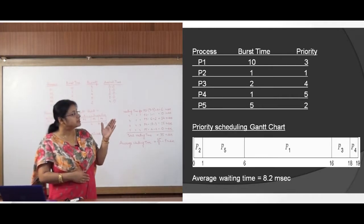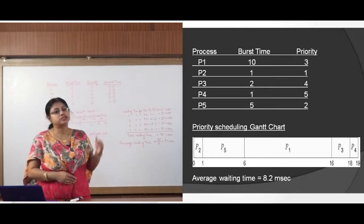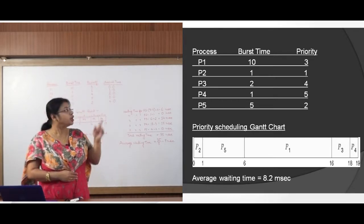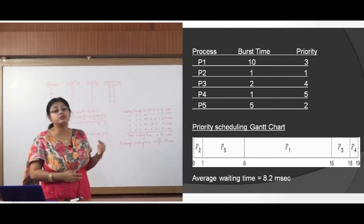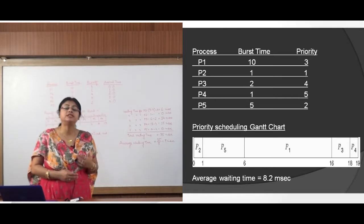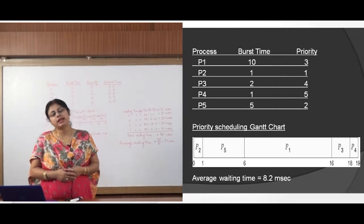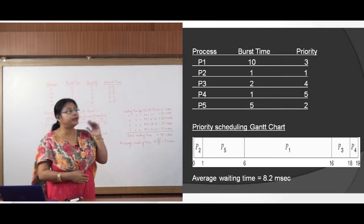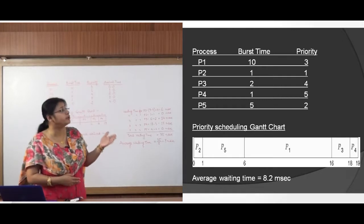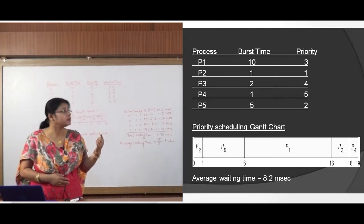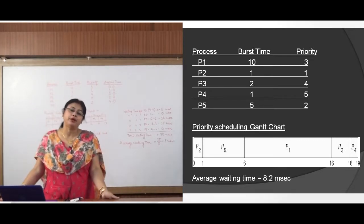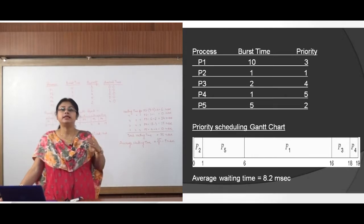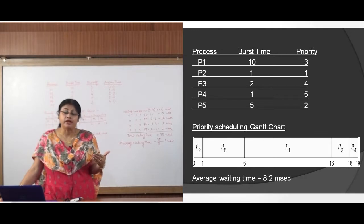Let us have one example. In this scenario we have 5 processes: P1, P2, P3, P4, and P5. Their burst times are: P1 = 10ms, P2 = 1ms, P3 = 2ms, P4 = 1ms, and P5 = 5ms. With their burst times, priority numbers are also assigned: P1 has priority 3, P2 has priority 1, P3 has priority 4, P4 has priority 5, and P5 has priority 2. The process with the lower priority number has greater importance and should be executed first.